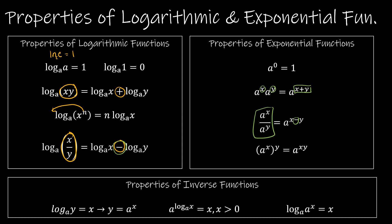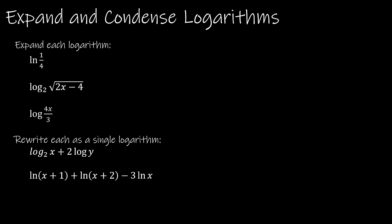The properties of inverse functions let us convert between logarithmic and exponential forms. For example, log base 3 of x equals y can be rewritten as 3 to the y equals x — I call it the swirly method, where the base of the logarithm is always the base of the exponential. Also, a to the log base a of something cancels to leave just x, and log base a of a to the x also cancels to leave just x.